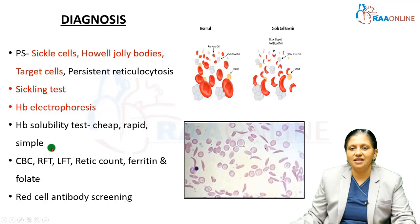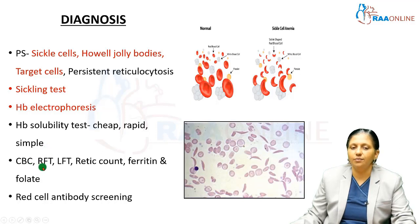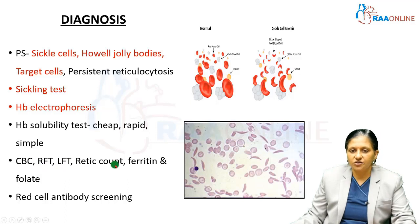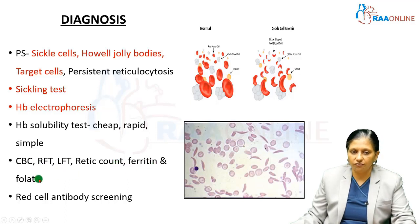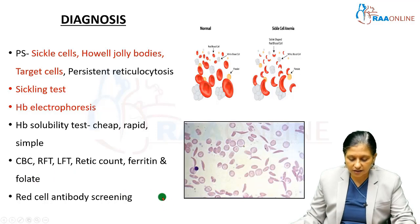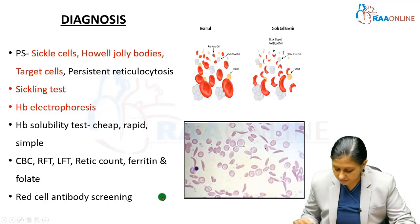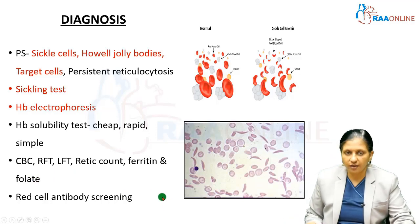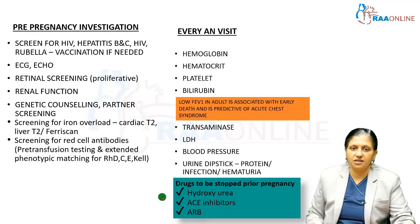Other investigations in a patient with sickle cell anemia include complete blood count, renal function test, liver function test, reticulocyte count, serum ferritin, serum folate, and red cell antibody screening to identify immune hemolytic anemias.